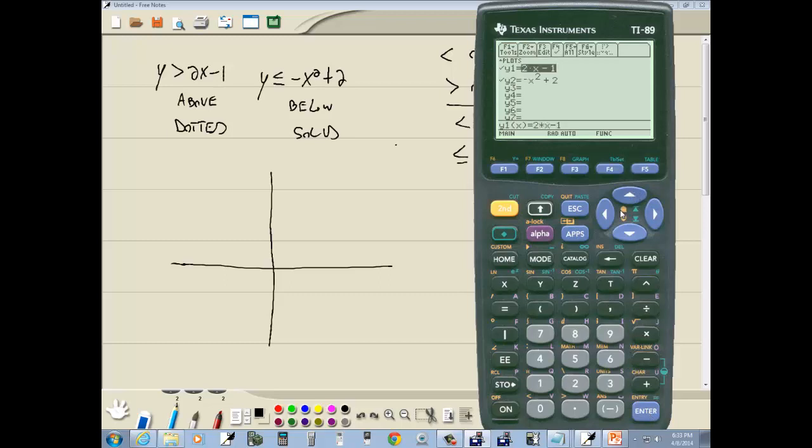Let's go back up to the first one, 2x minus 1. We said it's going to be above. What does that mean? If we go into our style menu, you see it says f6. I don't have an f6 here, but it's above my f1. So if I do 2nd f1, it brings this up. You see it's above and below.